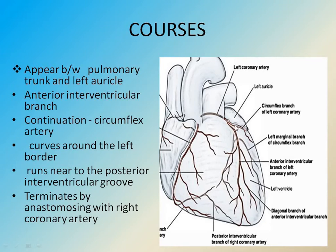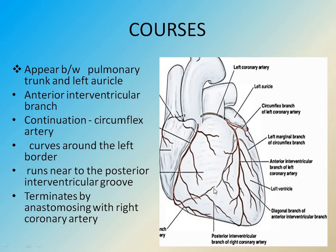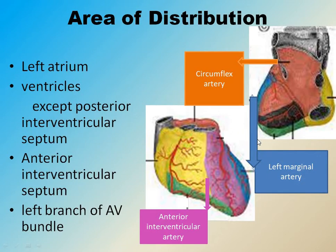The left coronary artery continues as the circumflex artery and curves around the left border, running near the posterior interventricular groove, and terminates by anastomosis with the right coronary artery. The left coronary artery supplies blood to the left atrium and ventricles except the posterior interventricular septum, while the anterior interventricular septum and left branch of AV bundle are supplied by the left coronary artery.